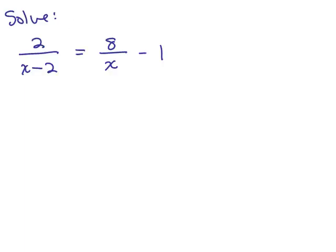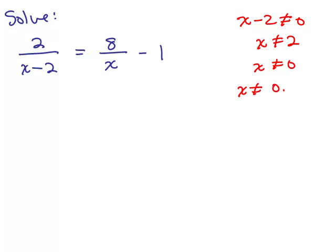Here's another problem: 2 over x minus 2 equals 8 over x minus 1. The first thing we should do is note what x cannot equal. We look at each denominator. One denominator is x minus 2, so x minus 2 cannot be 0, meaning x cannot be positive 2. The other denominator is x, so x cannot be 0.